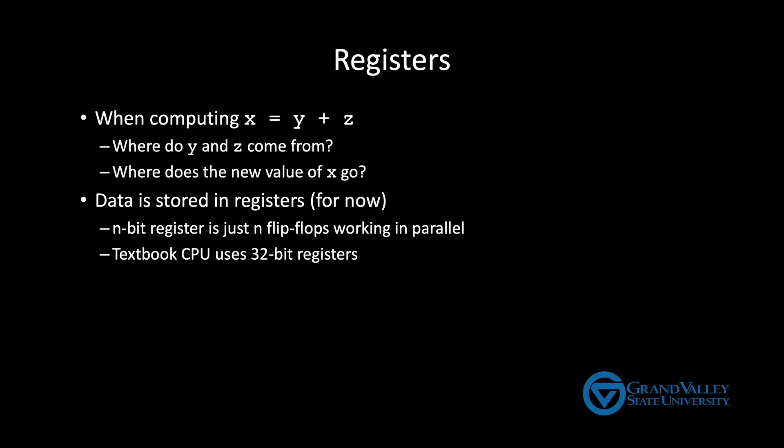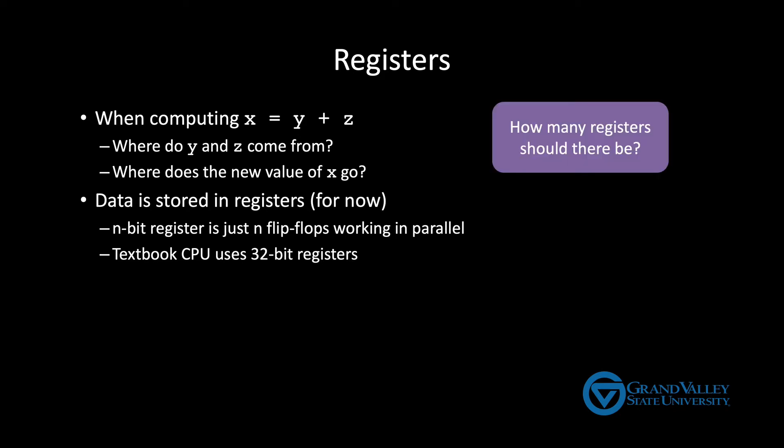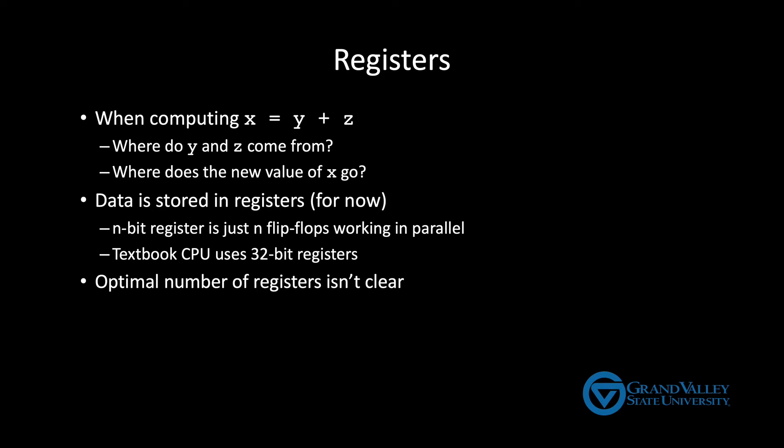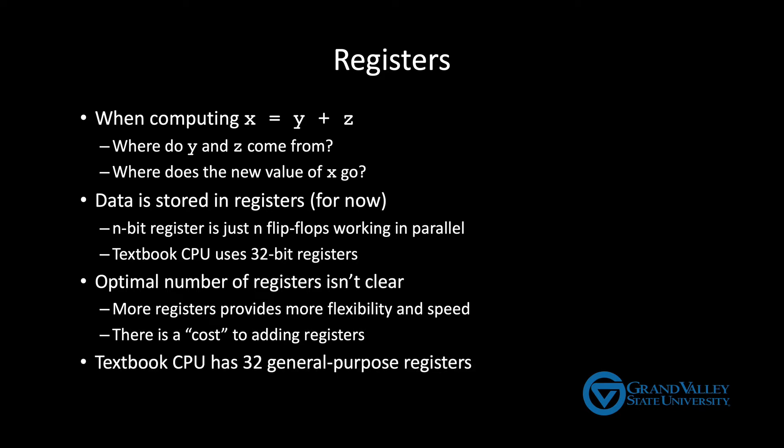So we know we want a 32-bit register, but how many of them do we want? The optimal number isn't obvious. The more you have, the more powerful your CPU is. But registers aren't free. Among other things, they take up limited space on the chip and they consume power. We'll come back and look at this trade-off later in the semester after we've learned more about how the CPU is built. For now, we'll just say that there are 32 registers.